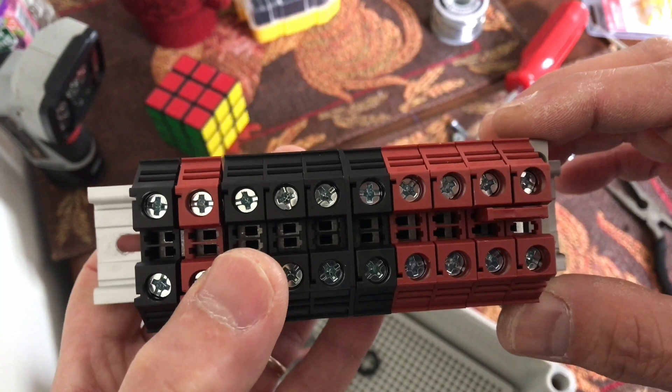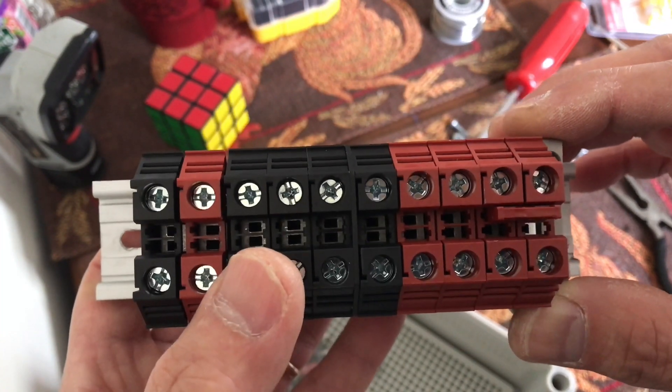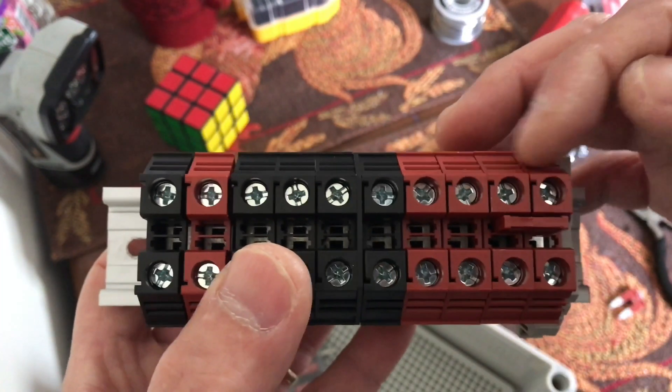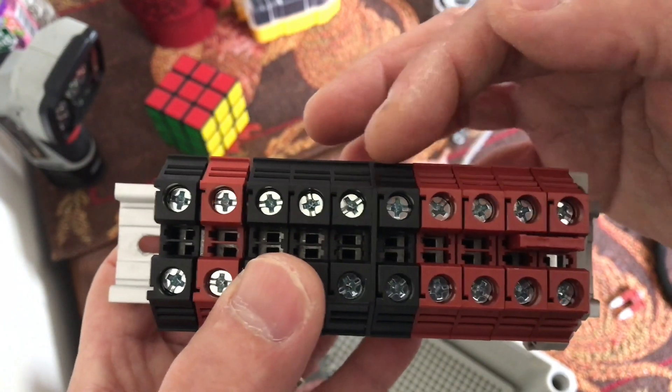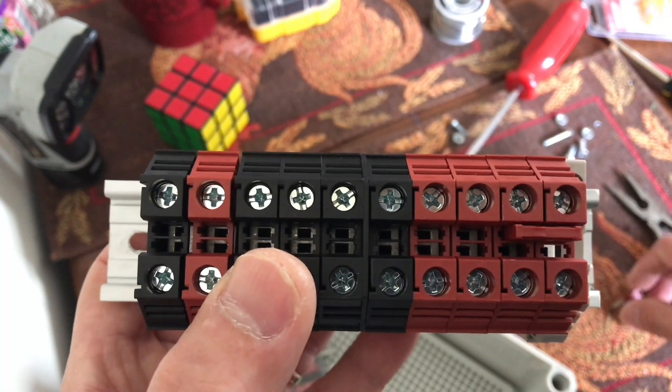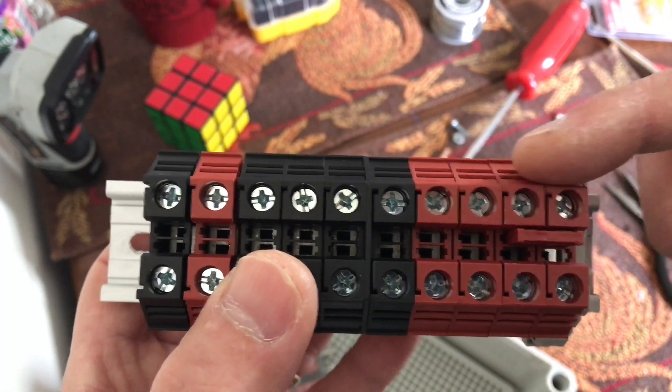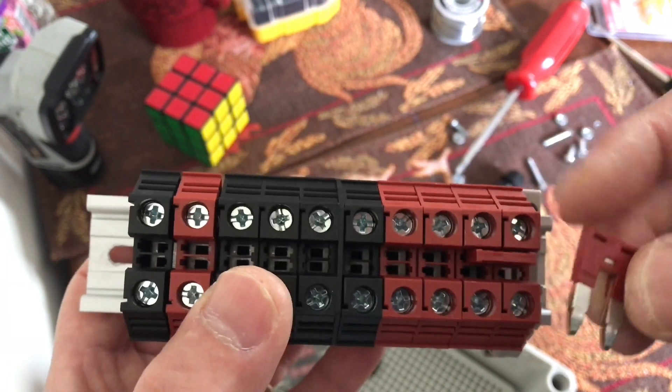Since I'm wiring my solar panel parallel, all I have to do is combine the positive and positive and negative and negative together for parallel configuration. The way to join this terminal blocks together is use this jumper right here.